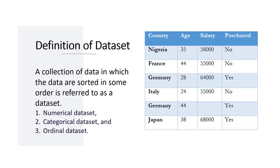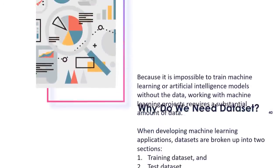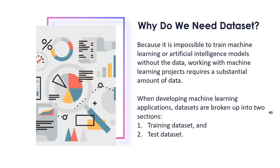There are usually three types of datasets: numerical dataset, categorical dataset, and ordinal dataset. Because it is impossible to train machine learning or artificial intelligence models without data, working with machine learning projects requires a substantial amount of data. One of the most important steps is to collect and organize the dataset — if the dataset is not properly prepared and pre-processed, the technology deployed behind any machine learning initiative will not function correctly. When developing machine learning applications, datasets are broken up into two sections: training dataset and test dataset.